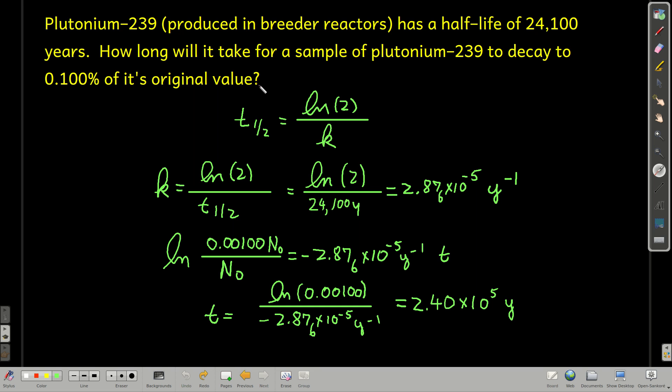So let's say we have a sample of plutonium-239, which is produced in breeder reactors. This has a half-life of 24,100 years. Let's figure out how long would it take for a sample of plutonium-239 to decay to 0.100% of its original value.